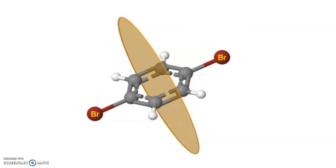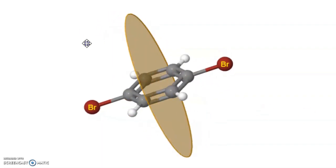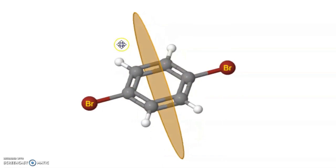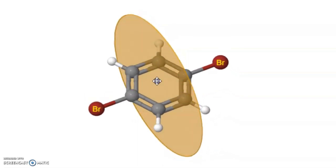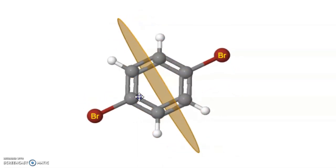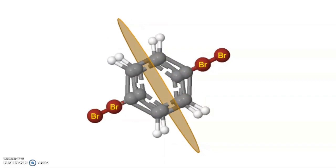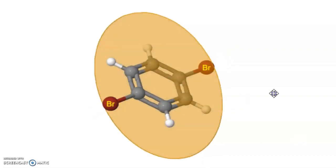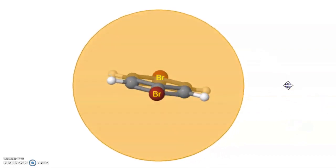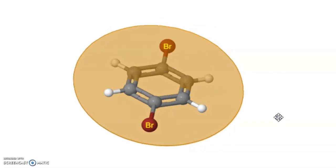If we reflect the molecule through this plane, the resulting orientation becomes indistinguishable with the original one. In this case, what we did is we reflected the molecule instead of rotation and this reflection also leads to an indistinguishable configuration and hence this operation can also be regarded as a symmetry operation.